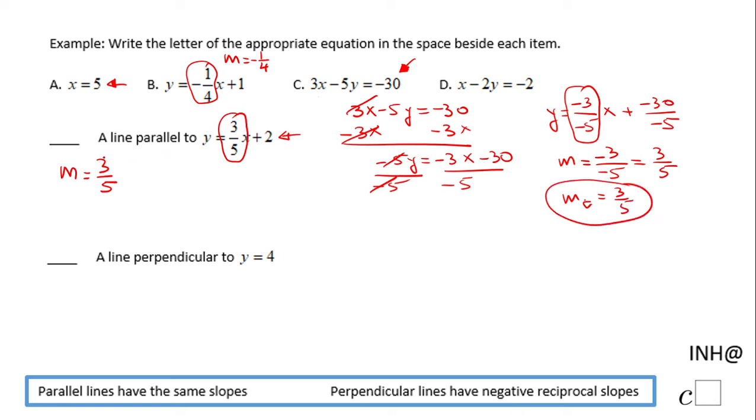We notice the slope of our given line is also 3/5, so here I'm gonna put the letter C.